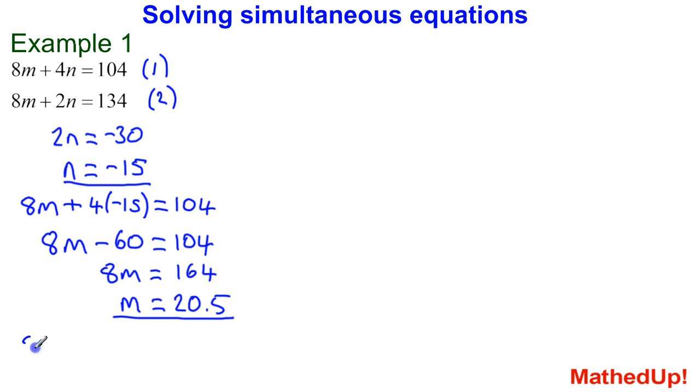So 8m, because m is 20.5, that's going to be 8 times 20.5 plus 2 times negative 15. And I'm expecting this to be equal to 134 if I'm successful.